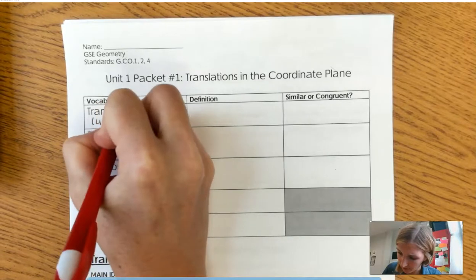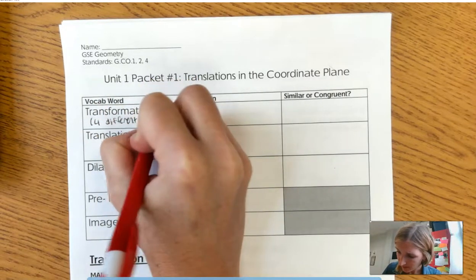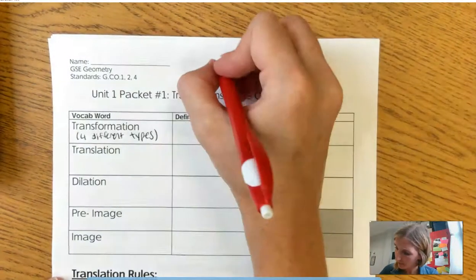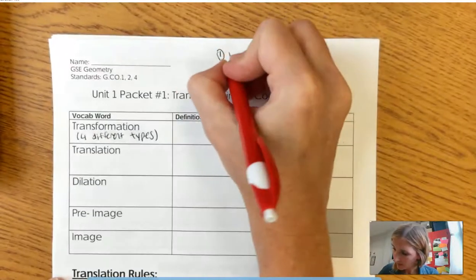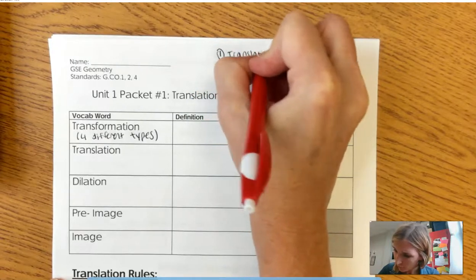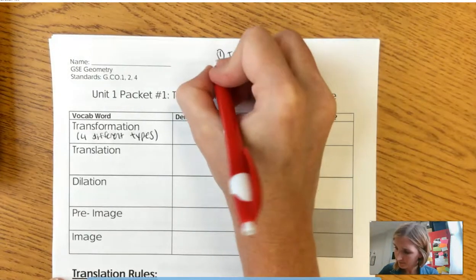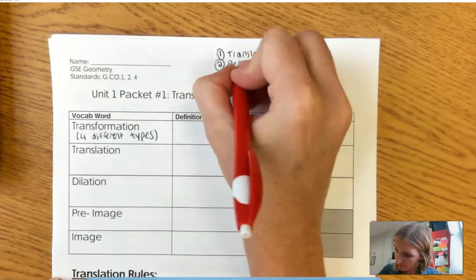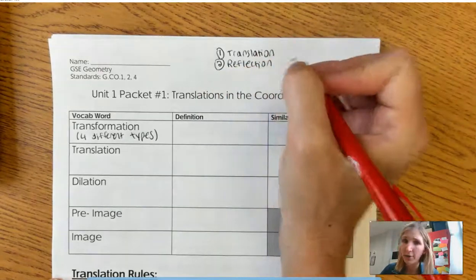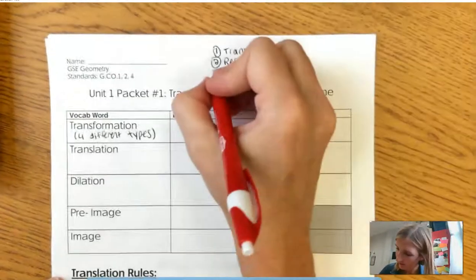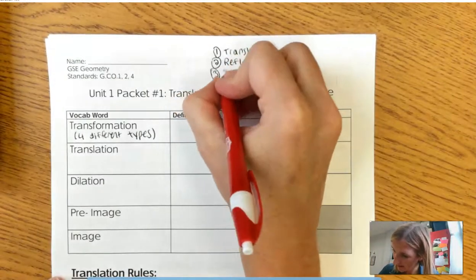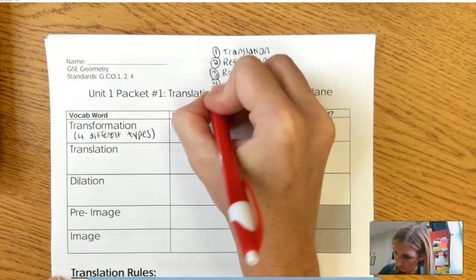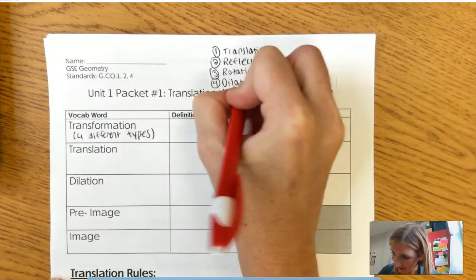Alright. I'm going to go ahead and write up here the four types. Number one, translation. That's what we're talking about today. Number two, reflection. I know, I know, we'll get to it. Number three, rotation. And number four, dilation.